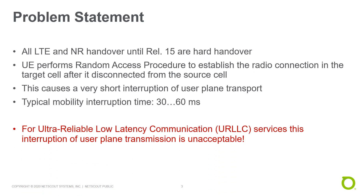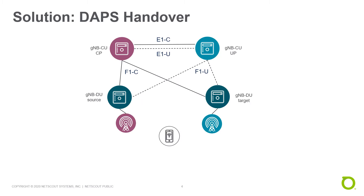However, for ultra-reliable low-latency communication services, this interruption of the user plane transmission is unacceptable. The solution is straightforward: during the handover, the mobile remains connected to two cells — the source cell and the target cell simultaneously. This is very similar to the soft handover that we know from UMTS.